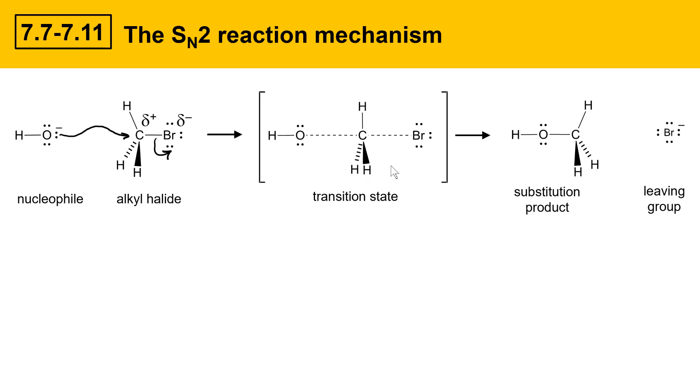This is a fairly uncomfortable state for carbon to be in, and this species is really quite high energy. That's the reason it's drawn in brackets. It can't be isolated. It's a high energy point on the path from starting materials to products.